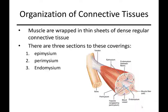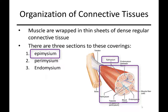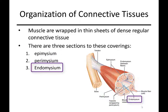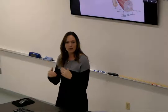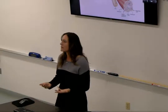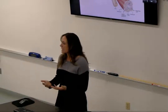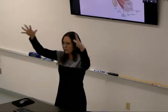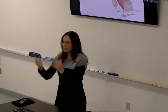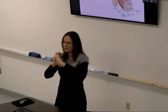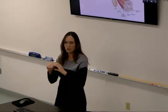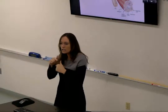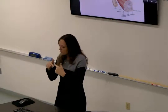Imagine we have the epimysium, perimysium, and endomysium — they are coverings. 'Mysium,' the M-Y, refers to muscle, so it's a muscle covering. Epi means around the whole entire muscle. Peri means around some bundles — you have muscle cells that are bundled — and endo means around a single muscle cell.